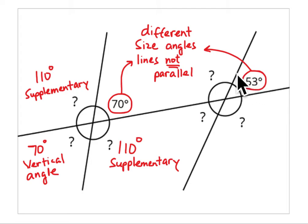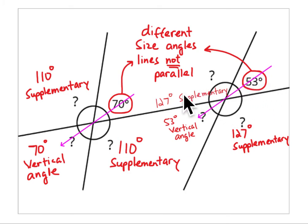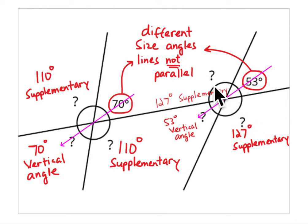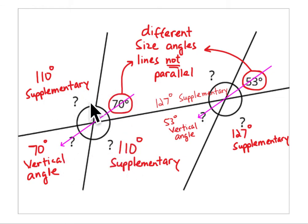Then you can use vertical angles — this is a vertical angle, this is a vertical angle. Up here: 53 plus what equals 180 degrees? That's 127 degrees. These are supplementary angles adding to 180 degrees. Using vertical angles at the intersection gives 127 degrees the other way as well. You can also look at them as supplementary angles adding to 180 degrees. So 110 and 110 are vertical, and 70 and 70 are vertical. Again, there are different ways to figure out the sizes of those angles.